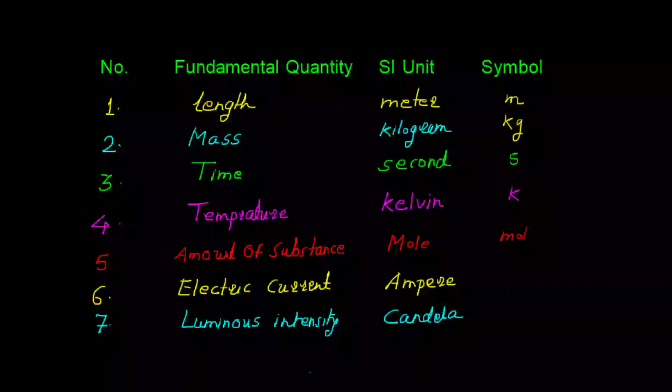Sixth fundamental quantity is electric current and its SI unit is ampere. Its symbol is capital A. Seventh fundamental quantity is luminous intensity. Its SI unit is candela and its symbol is cd.